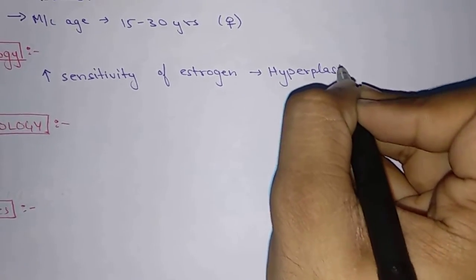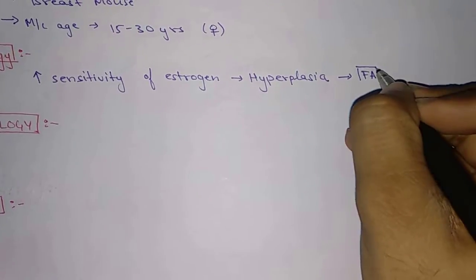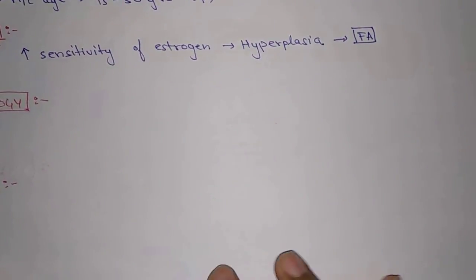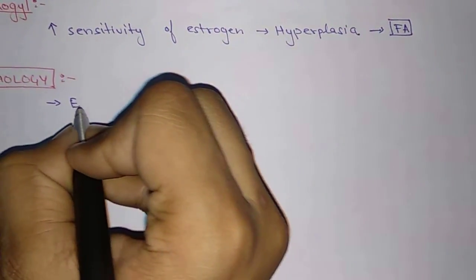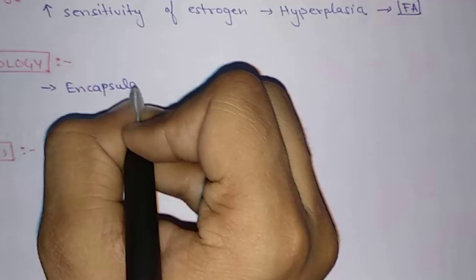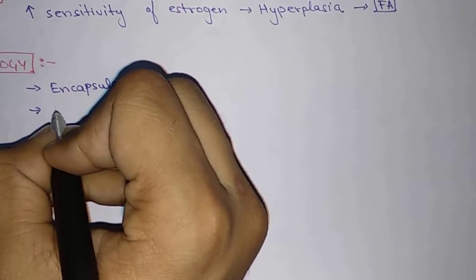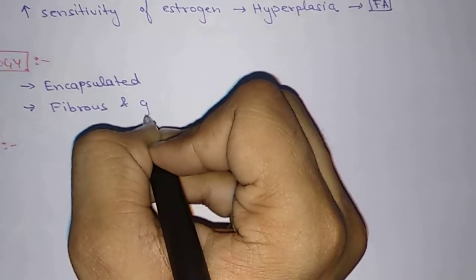For pathophysiology, it is an encapsulated spherical lesion because it is a benign condition. It is composed of both fibrous and glandular tissue.